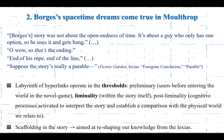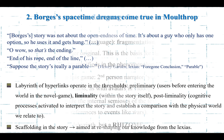The labyrinth of hyperlinks that operates in the thresholds takes the form of a preliminary stage, a liminal stage or a stage of liminality, and a post-liminal stage. In the preliminary stage, users before entering the novel-game get acquainted with it, in the sense that they can already predict what they're going to find, given that it deals with a real war already known to the users. The stage of liminality is the story itself, and the post-liminal stage involves the cognitive processes activated to interpret the story and establish a comparison with the physical world we know.